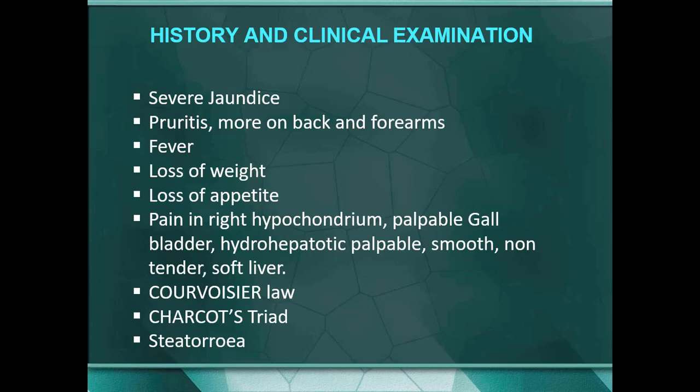Courvoisier's law states that there is a palpable gallbladder in the absence of any pain. If the patient has pain and a palpable gallbladder, it is least likely due to stone; but a palpable gallbladder without pain is most commonly because of malignancy. Charcot's triad: in acute cholangitis the patient has fever, pain in the right hypochondrium, and jaundice. Steatorrhea, as already mentioned, is bulky stools due to malabsorption of fat from bile salts.